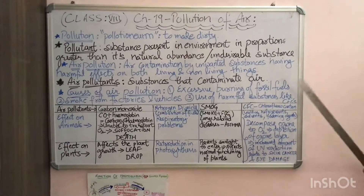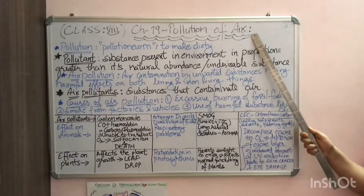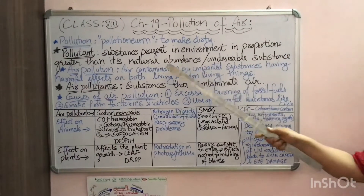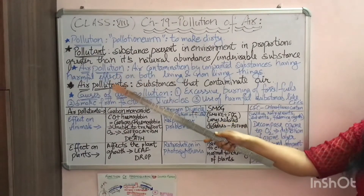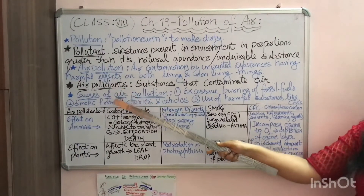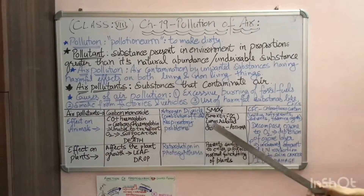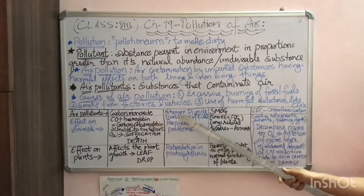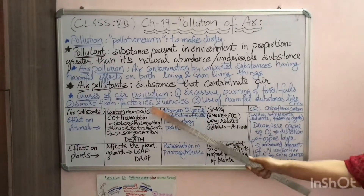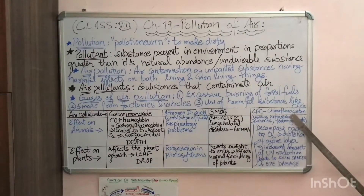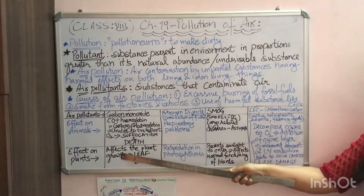In today's Part 1 video on pollution of air, we have studied: pollution, pollutant, what is air pollution, what are air pollutants, the causes of air pollution, and the four main air pollutants — carbon monoxide, nitrogen dioxide, smog, and CFC — how these four are produced in the environment, and their effects on animals and plants.